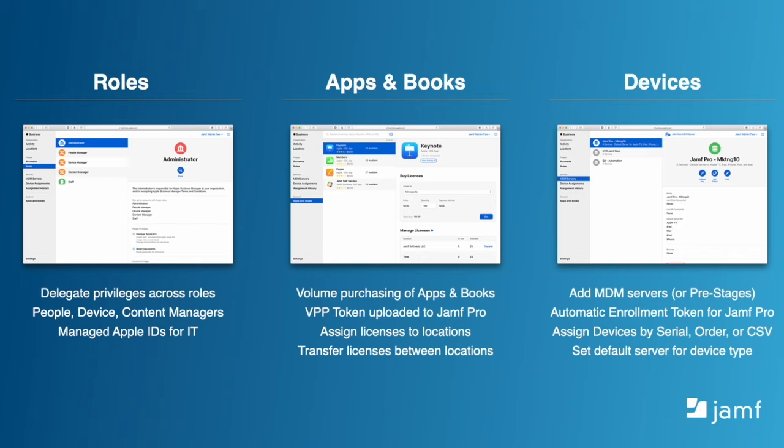First up, Roles. Here's where you delegate responsibilities to different team members, like an administrator who can do it all or a content manager who's only able to procure apps. Next is the Apps and Books section, formerly VPP or Volume Purchase Program. This is where you manage licenses for content you want to distribute to your devices. A token is generated which links your procured licenses to your Jamf Pro server.